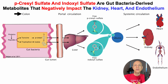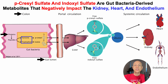Starting in the colon — or more specifically, inside the gut lumen, which is the inside of the intestine — proteins that make their way to the large intestine are digested into peptides, and those peptides are converted into amino acids, in this case tyrosine and tryptophan. Tyrosine is converted into p-cresol by gut bacteria, and tryptophan is converted into indole, also by gut bacteria.